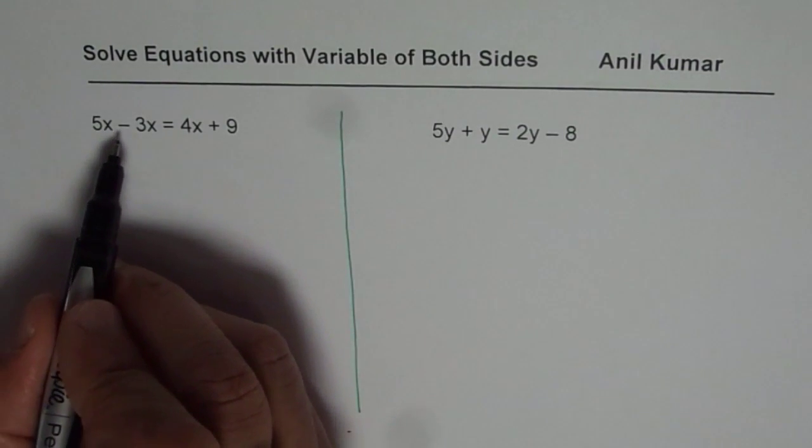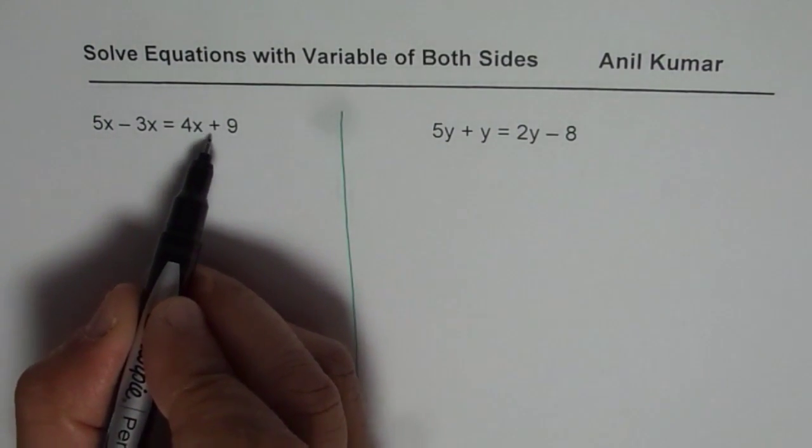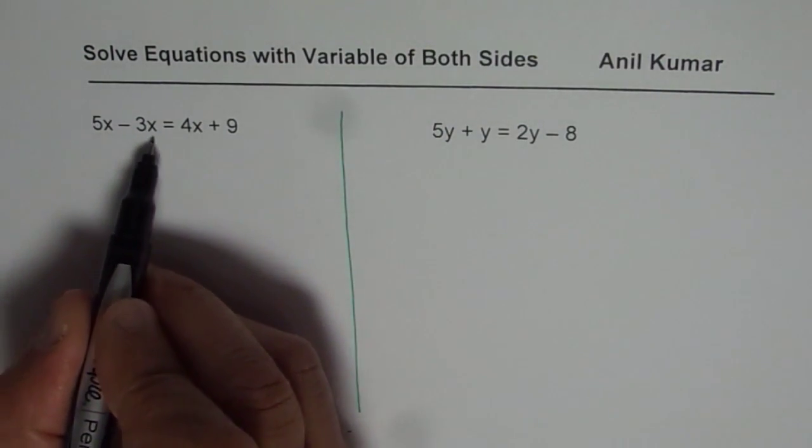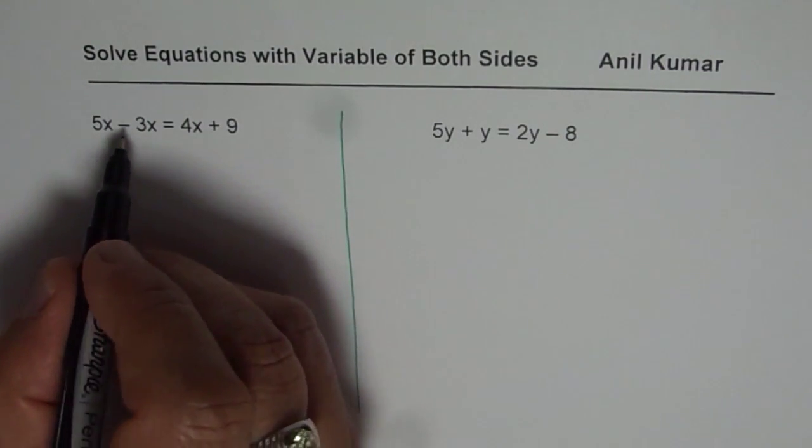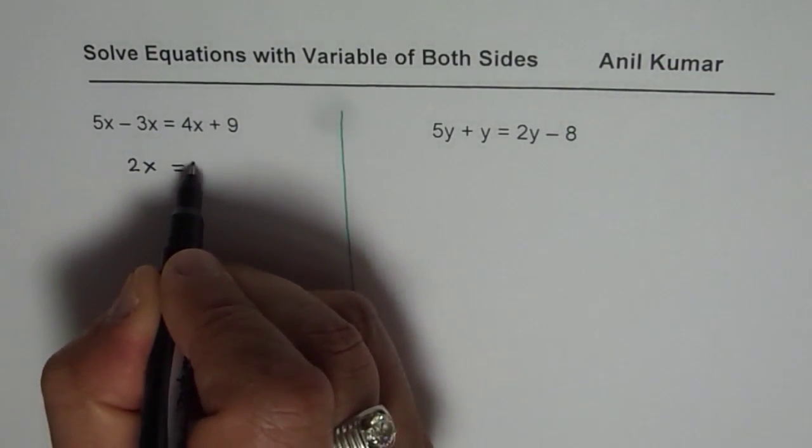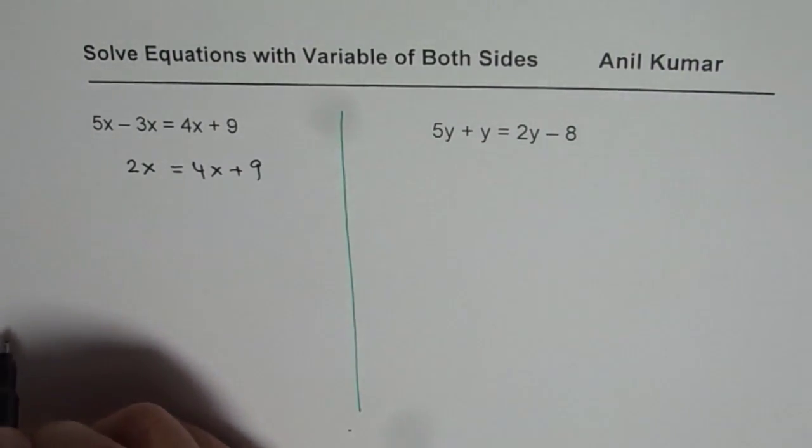The equation is 5x minus 3x equals 4x plus 9. Let us first simplify what we have on the left side. We have like terms 5x and 3x, so 5x minus 3x is 2x. Let us simplify them and write 2x equals 4x plus 9. That is a better step.